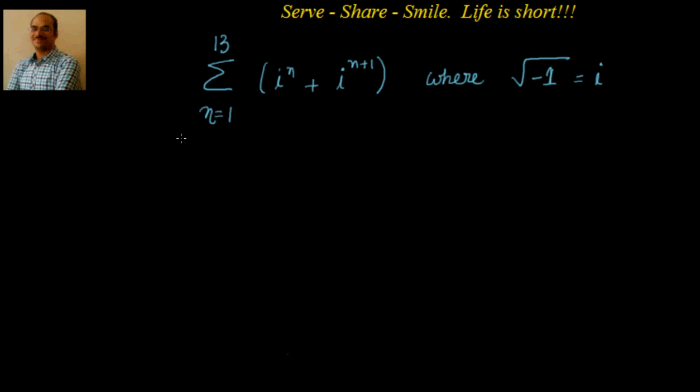So we have to find out what is the sum where square root of minus 1 equal to i, or i² = -1. Can I say that i² = -1, which is nothing but the same. So we have to find out this sum.